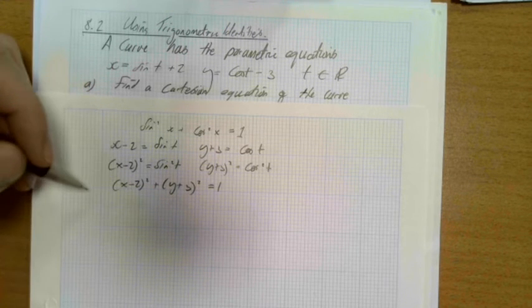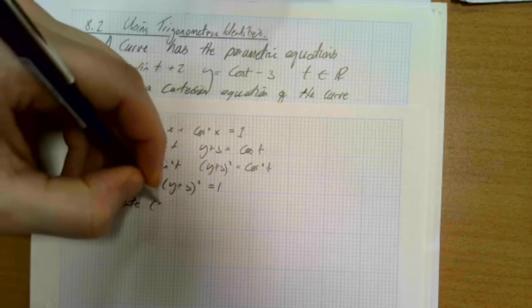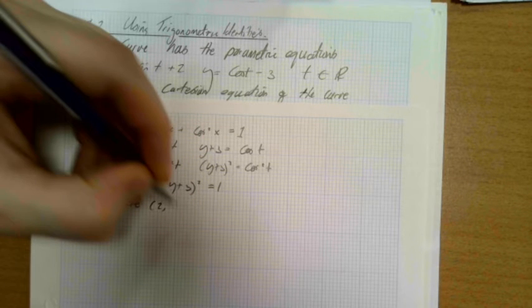Well, this is just the equation of a circle, isn't it? With a centre (2, -3) and a radius 1.